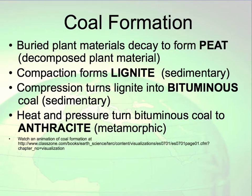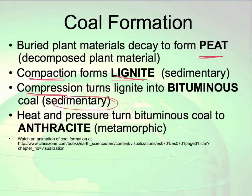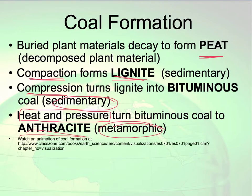The first stage of coal is called peat. Buried plant materials decay to form peat. Then we get some compaction, which forms lignite coal — the next degraded form of coal. More compression gives us bituminous coal, which is still sedimentary. Finally, once it is buried deep enough and heat and pressure are applied, it becomes a metamorphic rock. The metamorphic form of coal is called anthracite, and anthracite is actually the most efficient form of coal, but it also takes the longest to form.